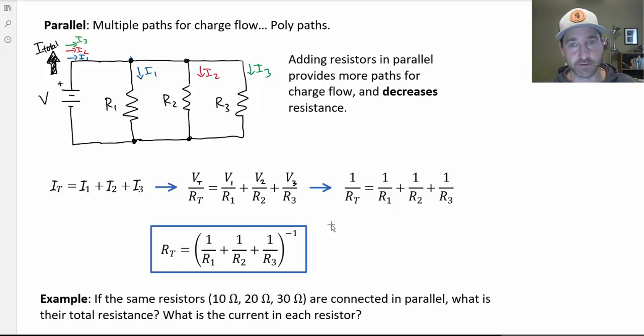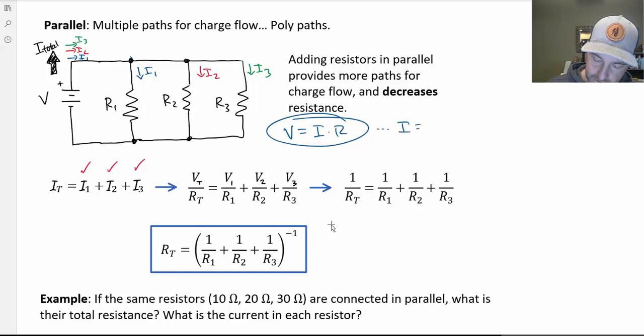Now how does this work out in terms of calculations? To figure out the total resistance, in series we just add it up. But in parallel, it's the currents that add up, not the voltages. I've got the three different currents for resistor 1, 2, and 3 added up, giving me some total current in the circuit. But if we remember Ohm's law, V equals I times R for any circuit element, I can substitute in.